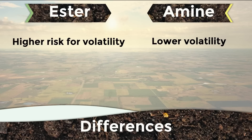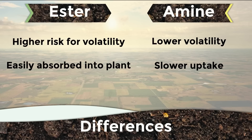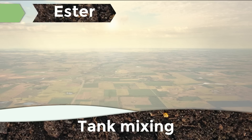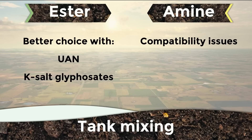Another key difference to consider is that esters provide slightly quicker weed control over amines. Esters are more active on weeds because they are easily absorbed by the plant's leaf. This increased activity makes esters the better choice when more aggressive weed control is needed. Tank mix partners are also a factor — if UAN fertilizer is being used as the carrier, then a 2,4-D ester is the best choice for the application, as they generally mix easier with UAN.